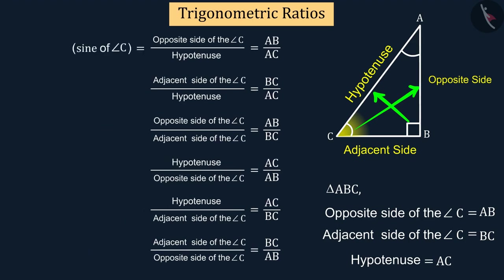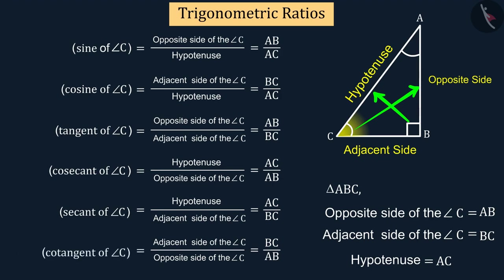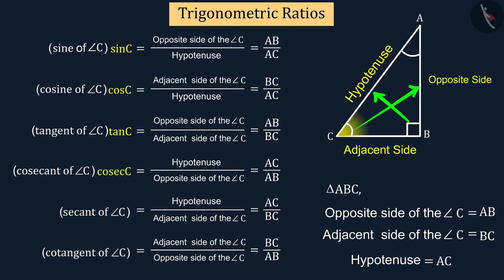We call these sine of angle C, cosine of angle C, tangent of angle C, cosecant of angle C, secant of angle C, and cotangent of angle C, respectively. In short forms we show these as sin C, cos C, tan C, cosec C, sec C, and cot C. These are known as trigonometric ratios of angle C.